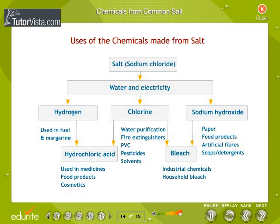Chemicals from common salt: Common salt is a raw material for various materials of daily use, such as sodium hydroxide, baking soda, washing soda, bleaching soda, bleaching powder, and many more. How one substance is used for making all these different substances is shown here.